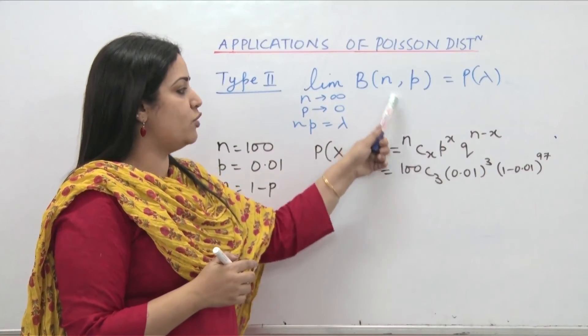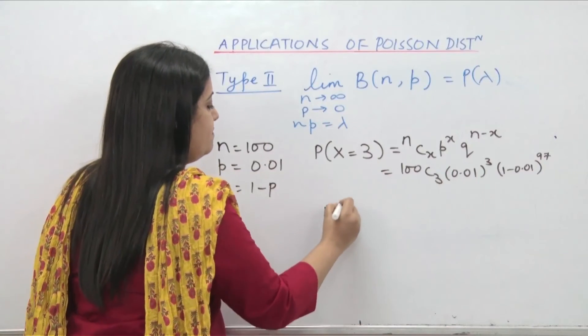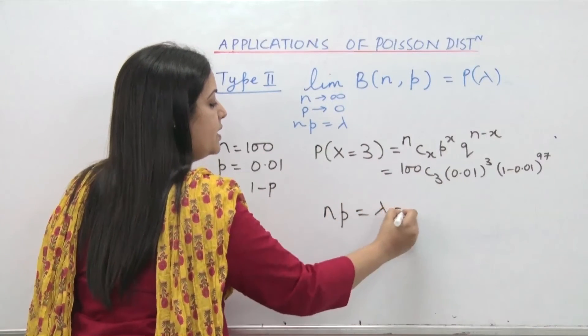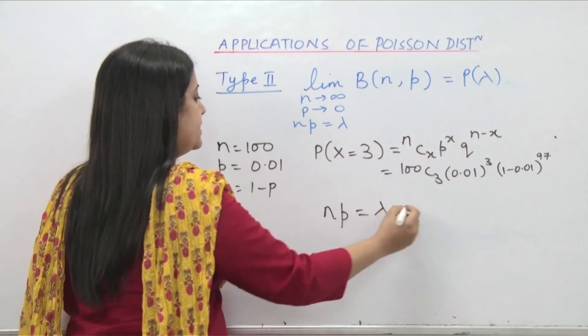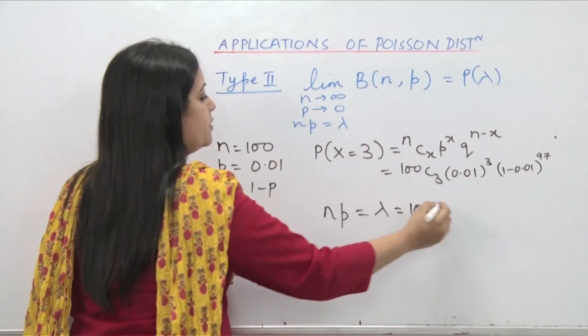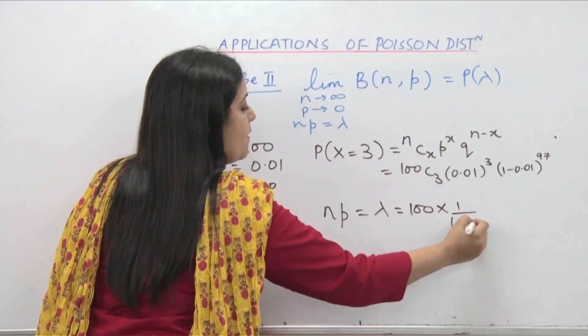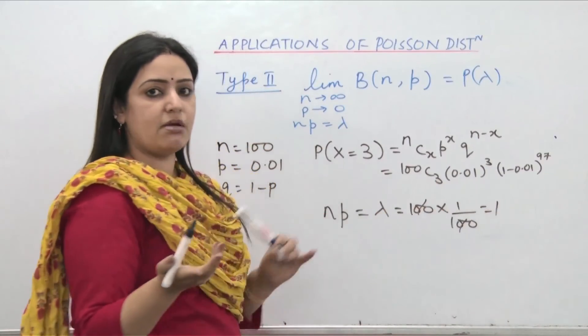So we would not use binomial in such a situation. We would rather use Poisson. What does that tell us? np would be taken to be lambda. Which because n is large and p is small becomes a decent number. See for example in this case n is 100 and p is taken to be 0.01 which is 1 upon 100. And therefore it just becomes a manageable number 1.